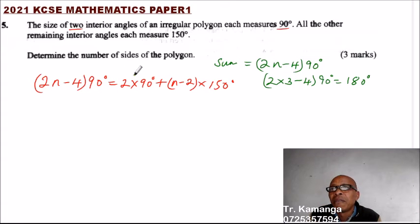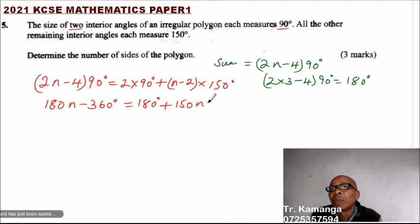We multiply 2n times 90 - that gives us 180n minus 4 times 90, that gives us minus 360 degrees - equals 2 times 90, that gives us 180 degrees plus you open the bracket: n times 150 gives us 150n minus 2 times 150, that gives us 300 degrees.